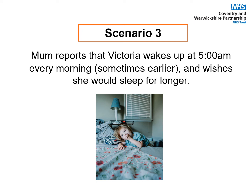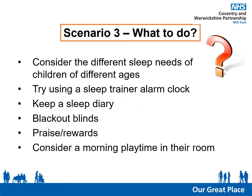In our third scenario, Mum reports that Victoria wakes up at 5am every morning, sometimes earlier, and wishes she would sleep for longer. Consider the different sleep needs of children at different ages: an average 3-year-old will need 12 hours sleep, a 6-year-old needs 10 hours, and a teenager will need 8 to 9 hours sleep. Also consider the number of naps they may be having through the day.